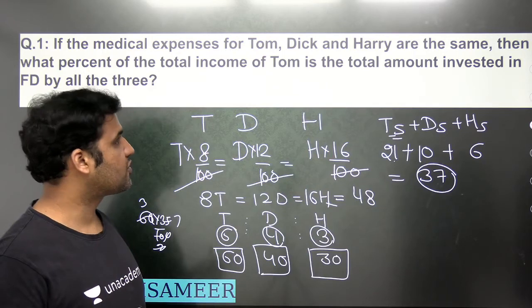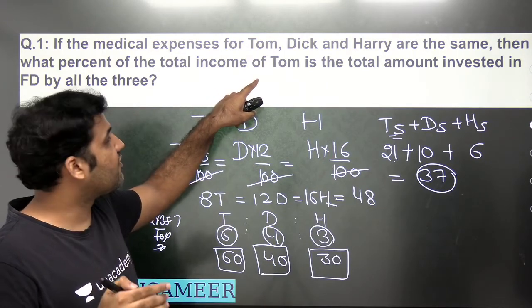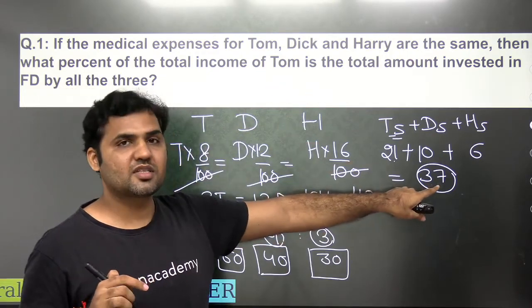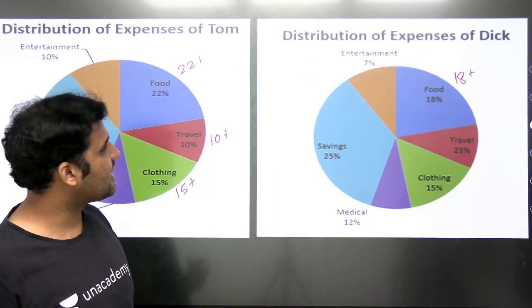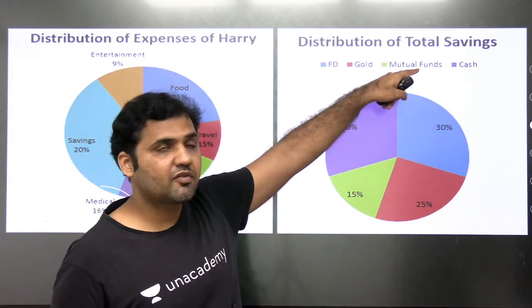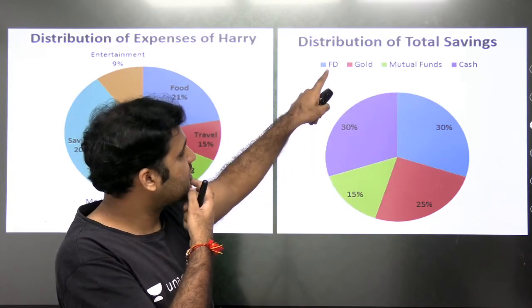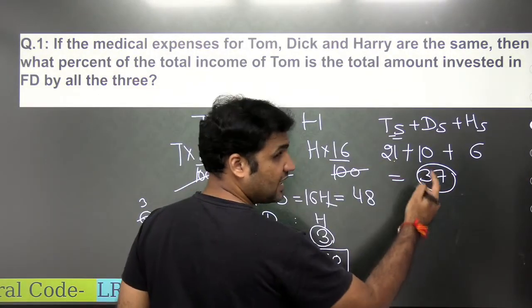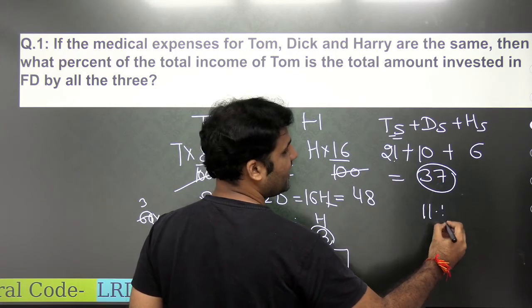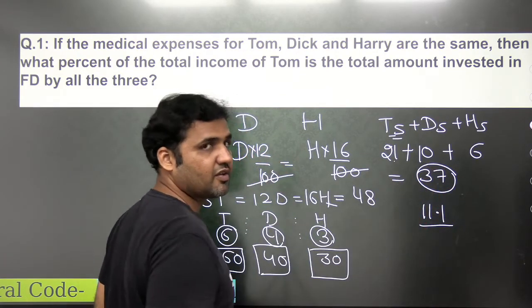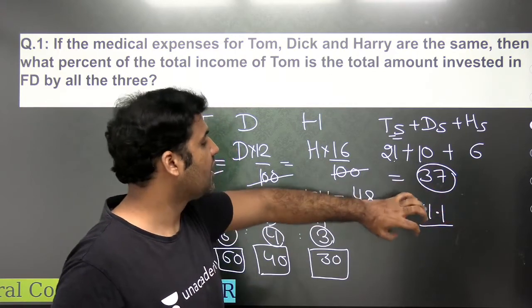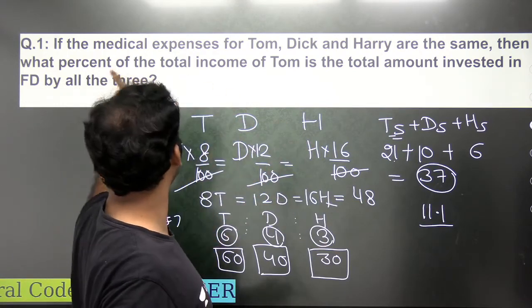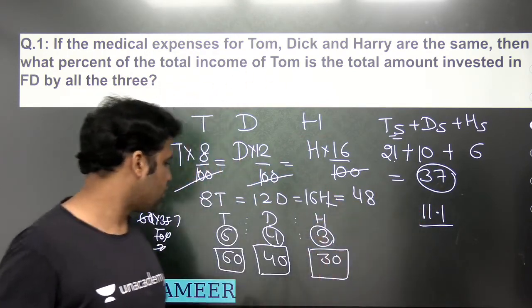Now, out of this total saving of 37 rupees, the amount invested in FD comes from the fourth pie chart. FD is 30% of the total savings. So 30% of 37 = 11.1 rupees is the amount invested in FD by all three of them.